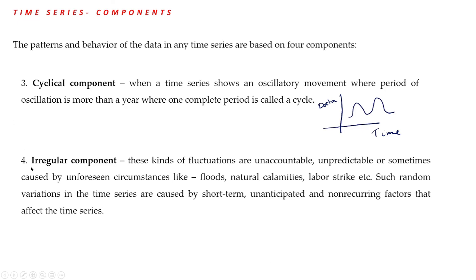The next component is the irregular component. It arises because of unpredictable or unforeseen reasons like floods, natural calamities, labor strikes, etc. For example, the pandemic situation resulted in loss of various businesses and a boom in some businesses like online businesses. Such random fluctuations are caused by short-term, unanticipated, and non-recurring factors — that is, non-repeating factors which affect the time series. The cyclical component is denoted by C and the irregular component is denoted by I.